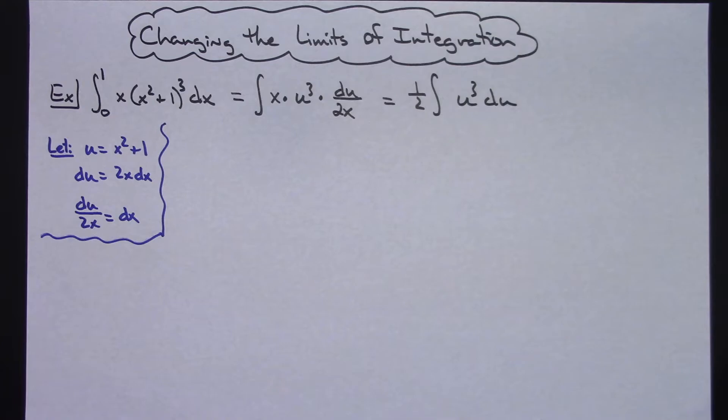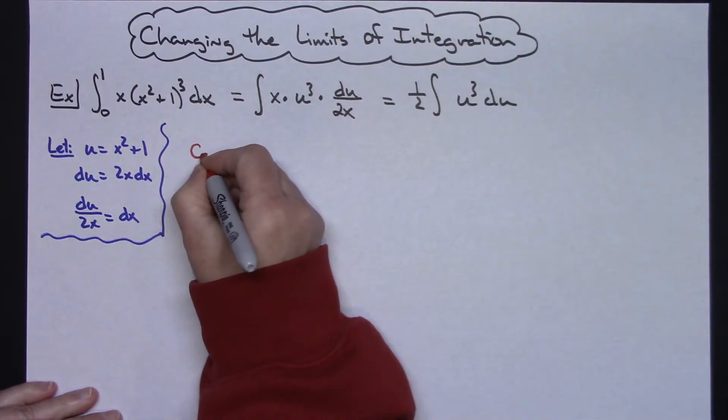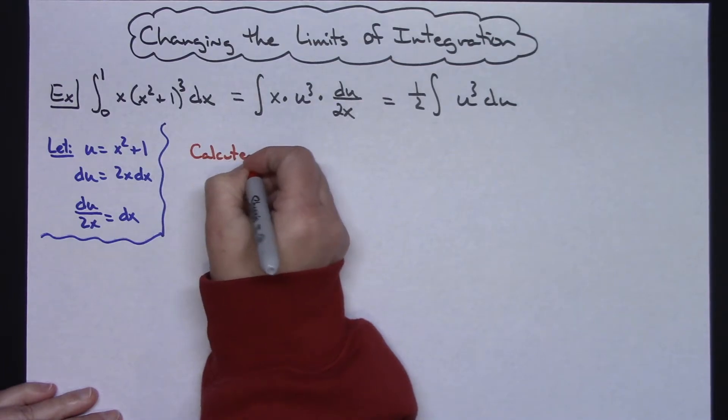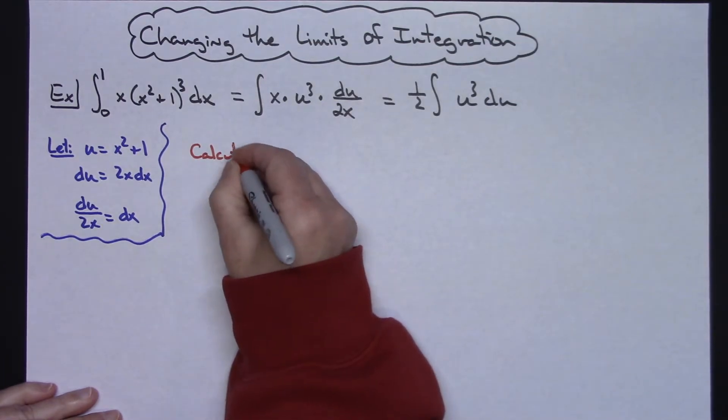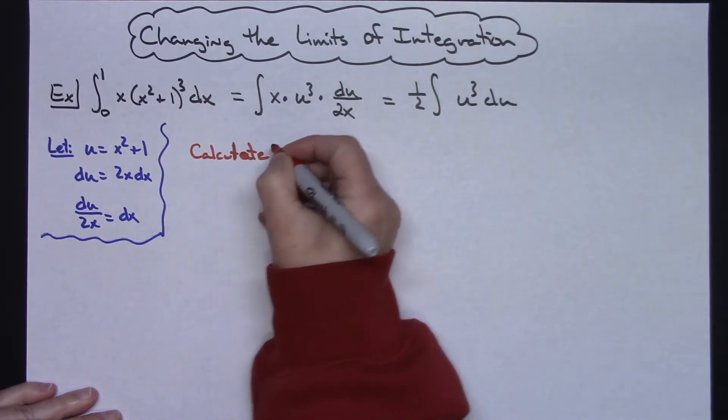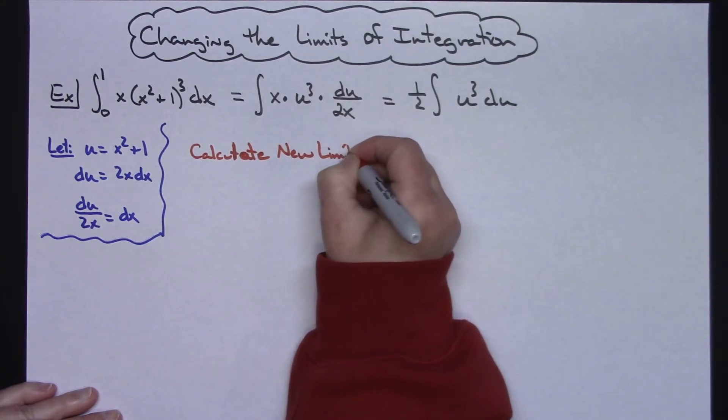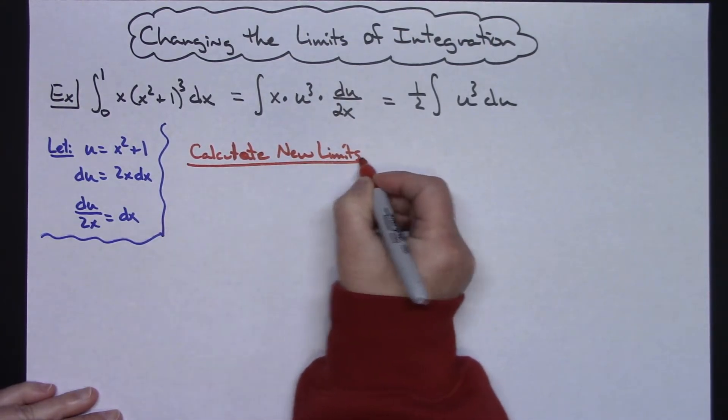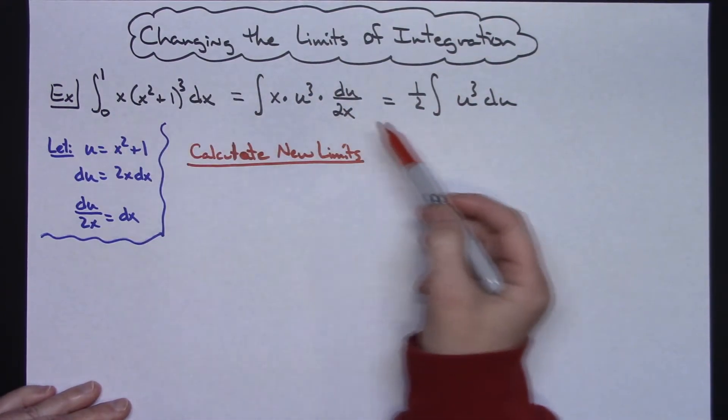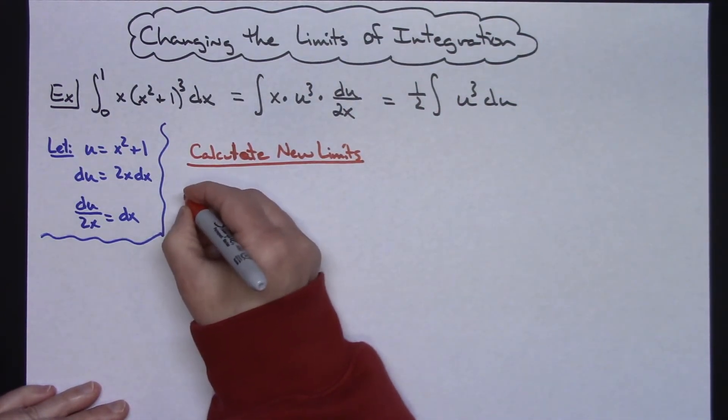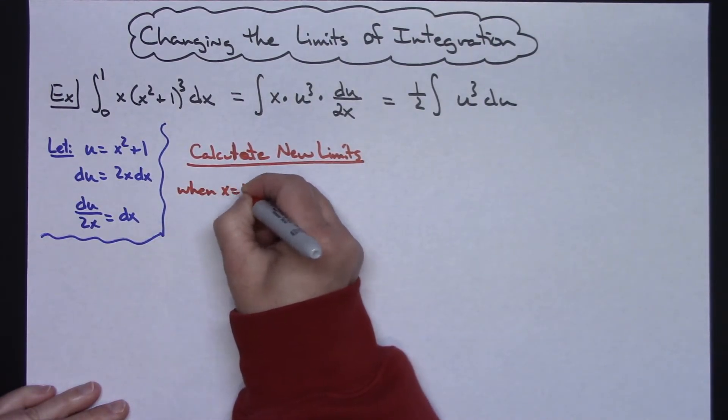So then I'm going to do some calculating here. Let's write out here just so we show all the steps. Calculate new limits. Now what I have to do is I've got to calculate a new upper limit and I have to calculate a new bottom limit. So let's clarify what we're doing when here. So when x equals 1.